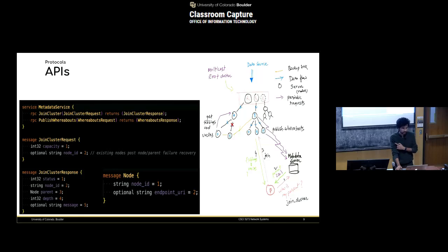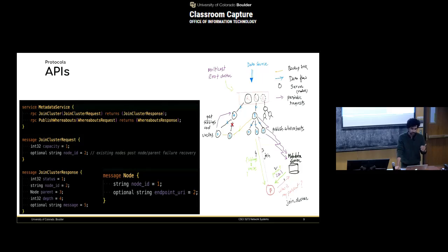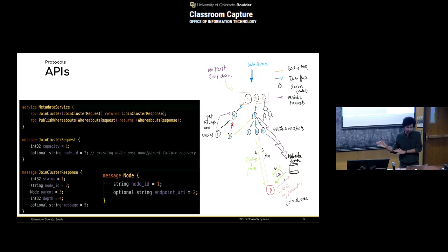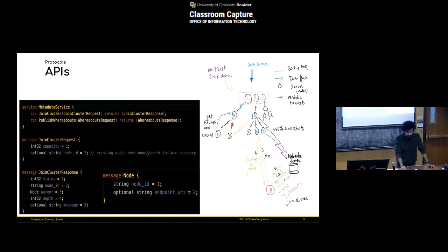Let's walk through the metadata service step by step. Whenever a new node wants to join a cluster, it sends a join cluster request to the metadata server. This is the protobuf definition for the RPC the metadata service supports. It supports two APIs: join cluster and publish whereabouts. In the join cluster request, the node sends its initial capacity and node ID. Node ID is optional because the metadata server assigns a node ID when a new node joins, but nodes that restart or recover from failure can reuse their previously assigned node ID, which helps with lifecycle tracing.